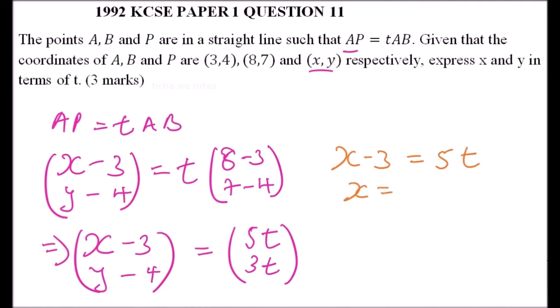Then y minus 4 is equal to 3t. Take 4 to the other side. Minus 4 becomes positive, so we have y equals 3t plus 4. That's how we work out that.